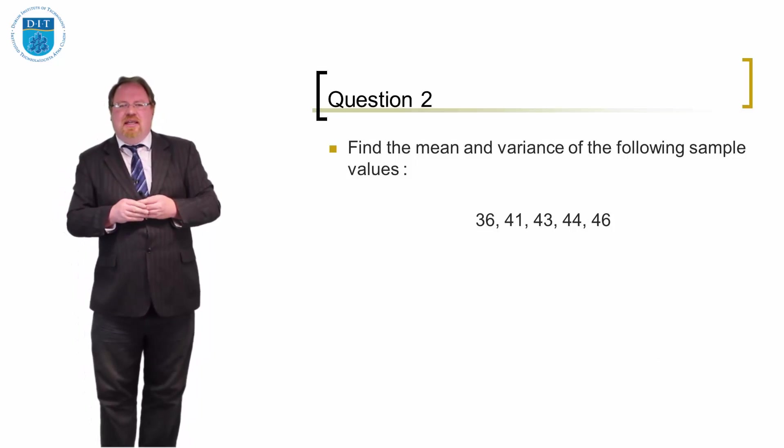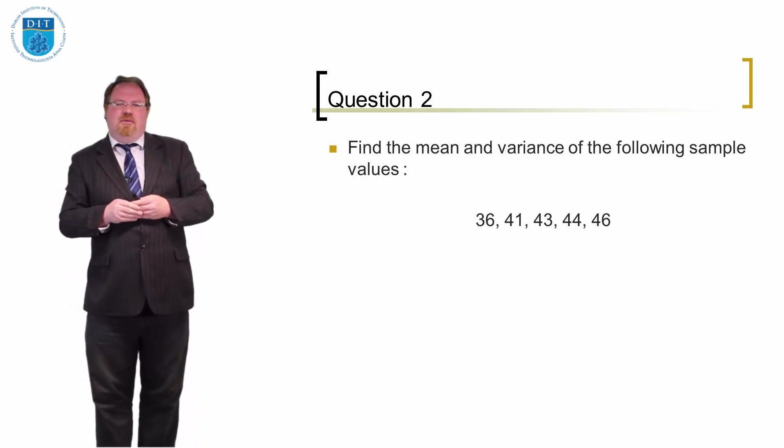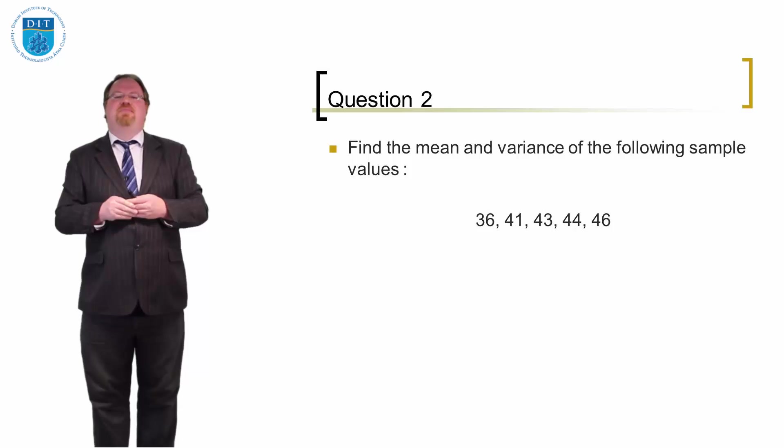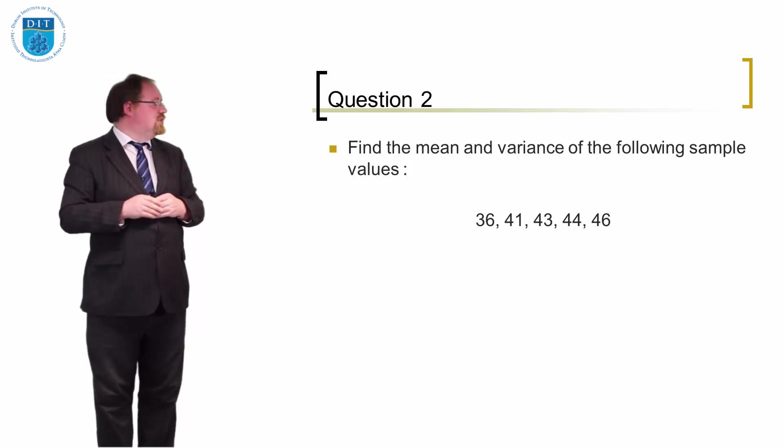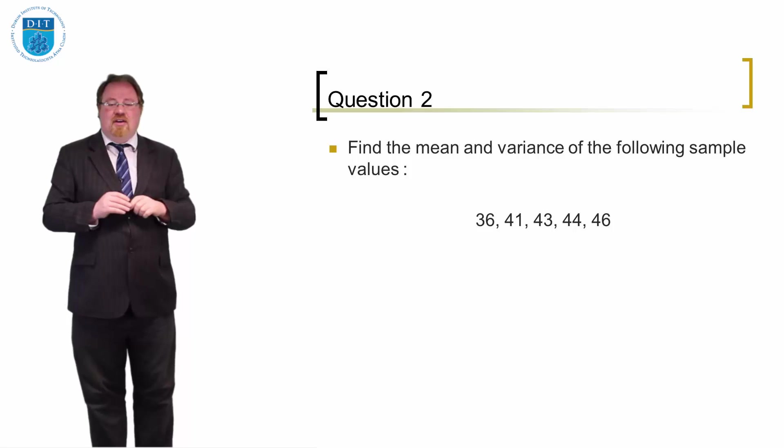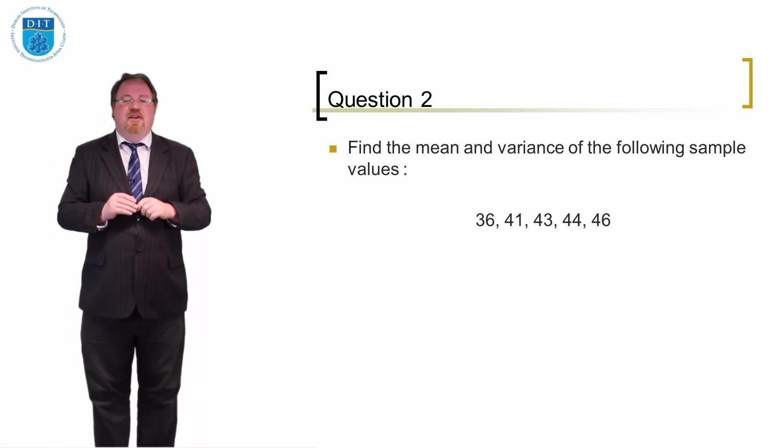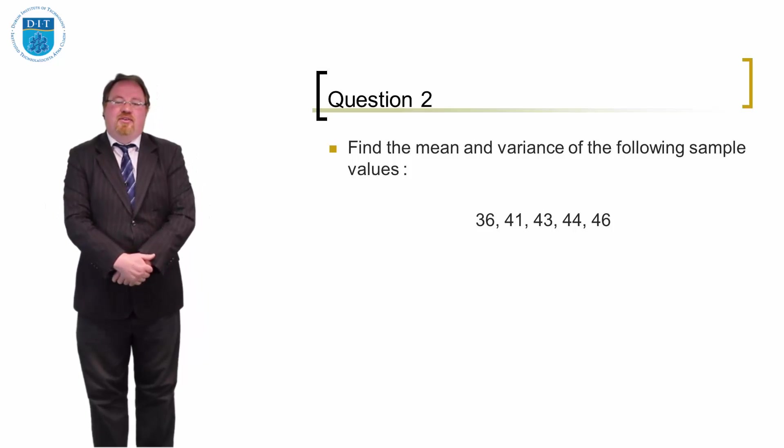I want to finish this video with a little exercise. So I'm going to give you some numbers and I want you to calculate the mean and variance of them and standard deviation as well. So here are the numbers: 36, 41, 43, 44 and 46. So how do we calculate the mean and variance? If you wouldn't mind pausing this for a moment and then I'll tell you the answer after the pause.